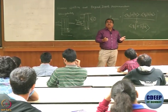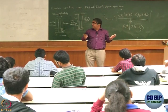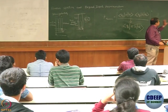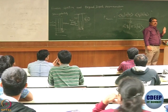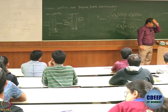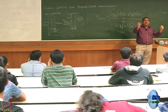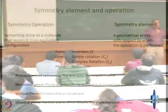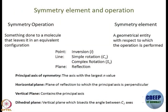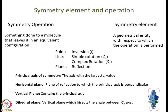When I say geometric entity, what I mean is point, line, or plane. With a point, you do an inversion. The meaning of inversion is: you start from some point of the molecule, go to the point of symmetry, and extend the line to an equal distance on the opposite side. If you reach the same entity from where you started, then that is a symmetry operation; otherwise not.